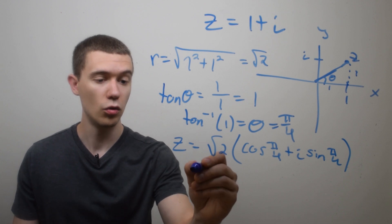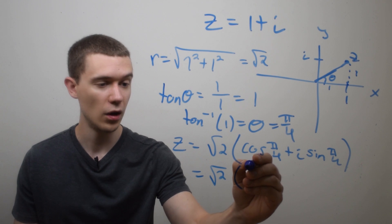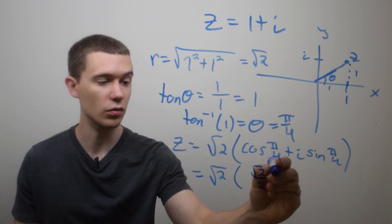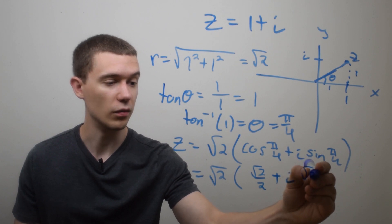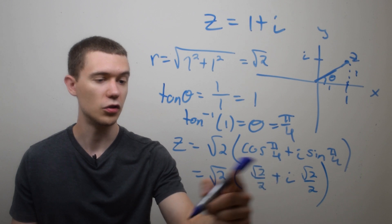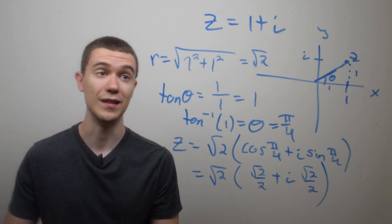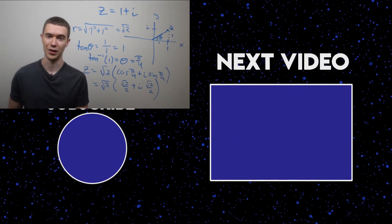And it's totally cool if you want to simplify these trig expressions. So cosine of pi over 4 we know is square root 2 over 2 plus i sine of pi over 4 is also square root 2 over 2. And you can see pretty quickly that if you were to distribute this root 2 through these parentheses, we would get back what we started. So this is the polar form of this complex number.